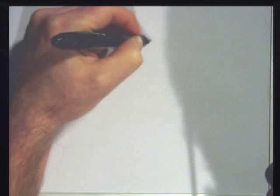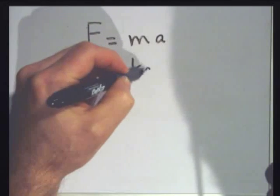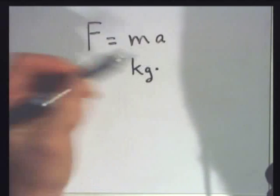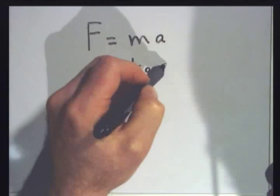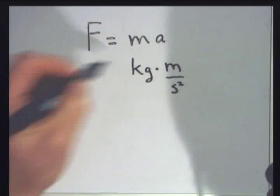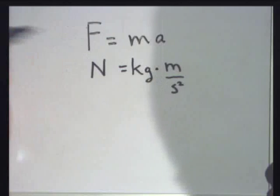Let's see what kind of units we get. I'll write down F equals ma. The units of mass are kilograms — we write them as kg. They can also be grams, but typically we use kilograms. In metric, the units for acceleration are meters per second per second, which is meters per second squared. And that's equal to something called a Newton, named after Isaac Newton.